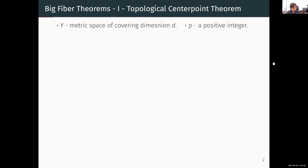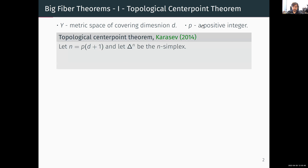Let's start with the topological center point theorem. If Y is a metric space of covering dimension d — where covering dimension means any open covering can be refined such that after refinement every set meets at most d+1 sets — and p is some positive integer, we fix n to be the product of p and d+1 and denote by Δ_n the n-simplex.